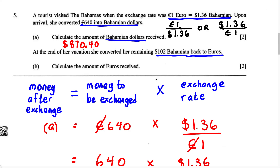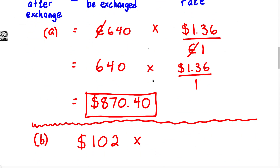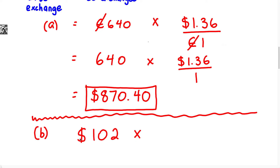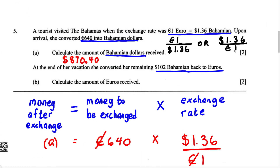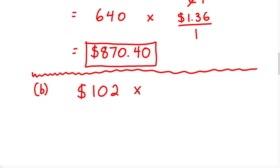The trick is to look at what we are trying to exchange. Because we're trying to exchange Bahamian dollars, which has the dollar sign, we should use the fraction where the dollar sign is in the denominator. Looking at our two fractions, the dollar sign is in the denominator in the fraction 1 euro over 1 dollar and 36 cents. Therefore, we multiply by 1 euro over 1 dollar and 36 cents.